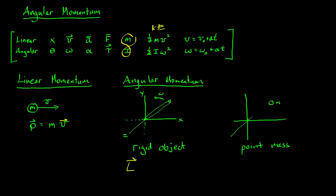L will be the angular momentum. Instead of mass, we use rotational inertia, and instead of velocity we use omega. So it's just the rotational inertia times the angular velocity — that gives us the angular momentum. Not a big leap, just getting used to the new symbols.